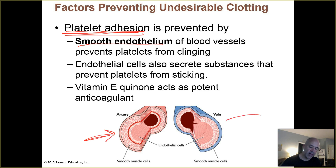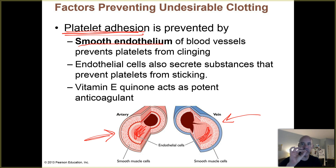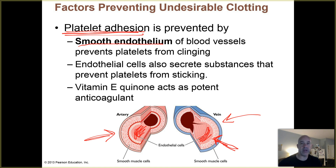Here's an artery, here's a vein — here's the inner lining, one cell thick, that's the endothelium. As long as that surface is nice and smooth, without rips and tears exposing the connective tissues deeper in the wall, the platelets are not going to stick. The endothelial cells also naturally secrete substances that prevent platelets from sticking. It's also been discovered that vitamin E quinone, a chemical derived from vitamin E, helps prevent unwanted coagulation as well.